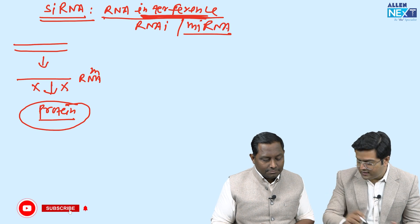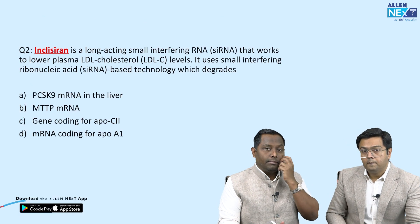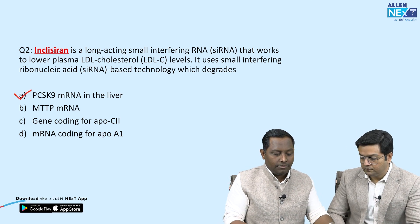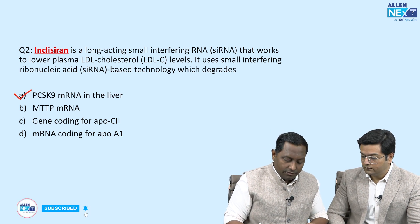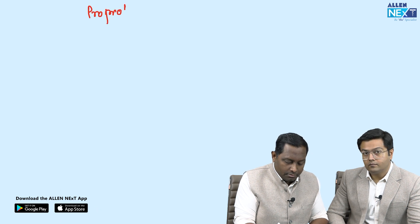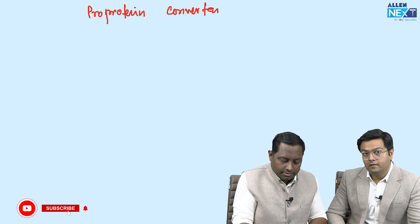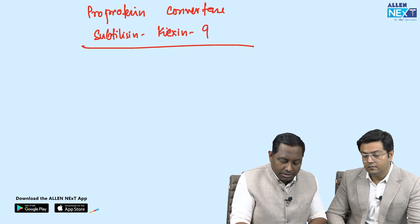Inclisiran is a newly approved drug and is a PCSK9 inhibitor. PCSK9 stands for proprotein convertase subtilisin kexin type 9. The LDL receptor normally takes in approximately 150 cholesterol molecules inside the cell. PCSK9 sits on top of the LDL receptor and causes LDL receptor degradation.